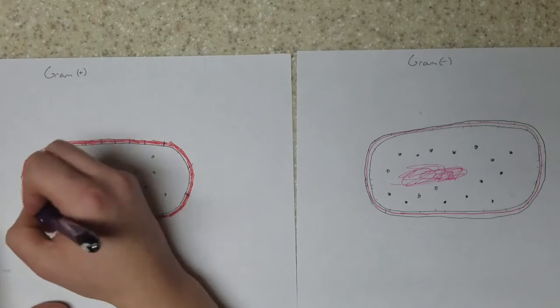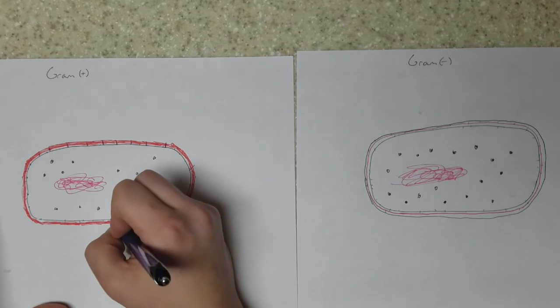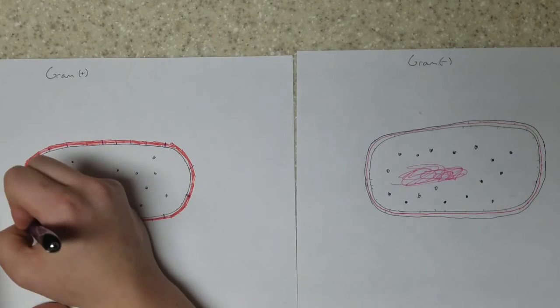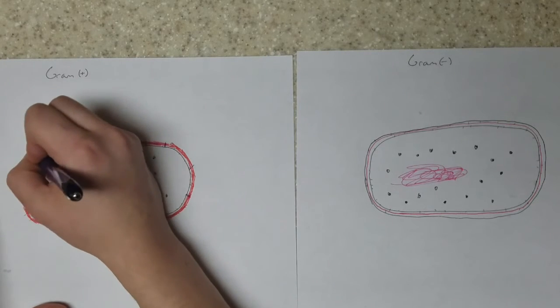And then after the lipoteichoic acid, I am drawing just teichoic acids, which are little, smaller proteins that are just found only on the cell wall. And they're only near the top.